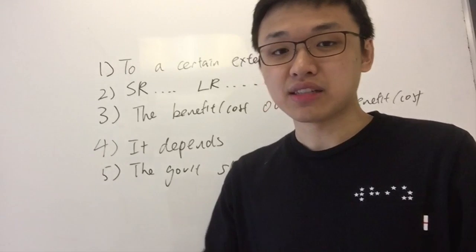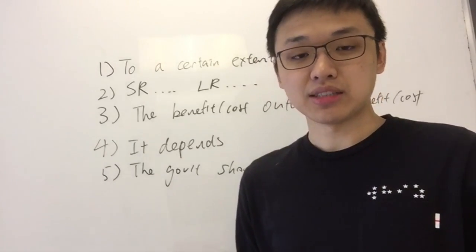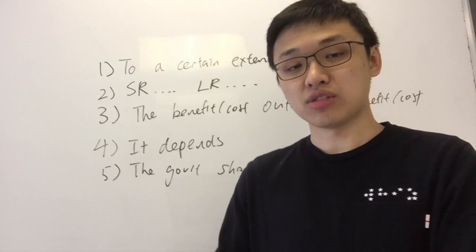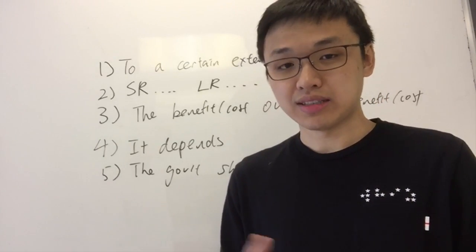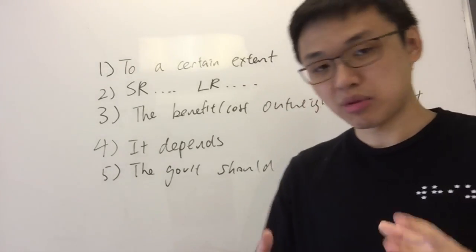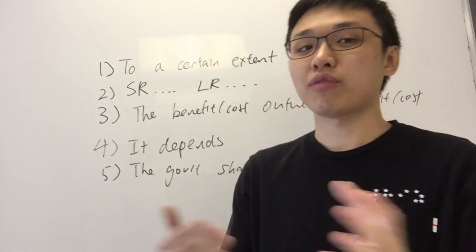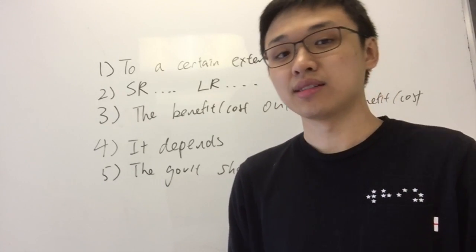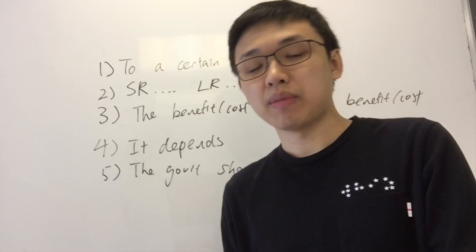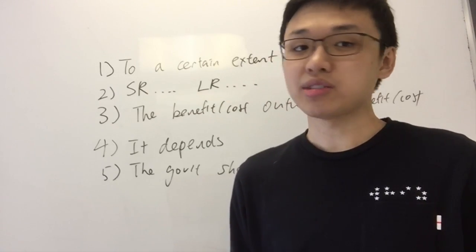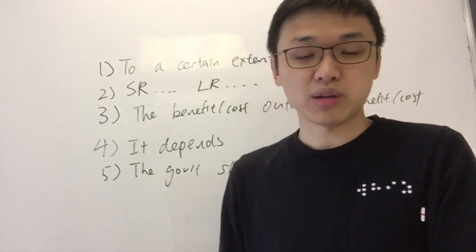But on the other hand, for addicted smokers — longer-term smokers — they have a lower PED because they are addicted to cigarettes. Therefore, indirect tax is less effective for addicted smokers. So you can say 'to a certain extent, indirect tax is effective — it is more effective for young smokers because they're not addicted and have a high PED, but less effective for addicted smokers.' With 'to a certain extent,' you're acknowledging there are both strengths and weaknesses.